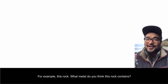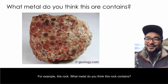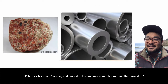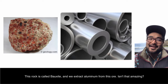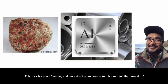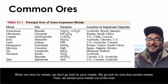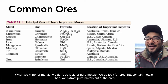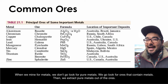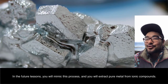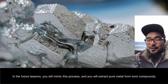For example, this rock — what metal do you think it contains? This rock is called bauxite, and we extract aluminum from this ore. When we mine for metals, we don't look for pure metals; we look for ores that contain metals, and then we extract the pure metals out of the ores. In future lessons, you will mimic this process and extract pure metals from ionic compounds.